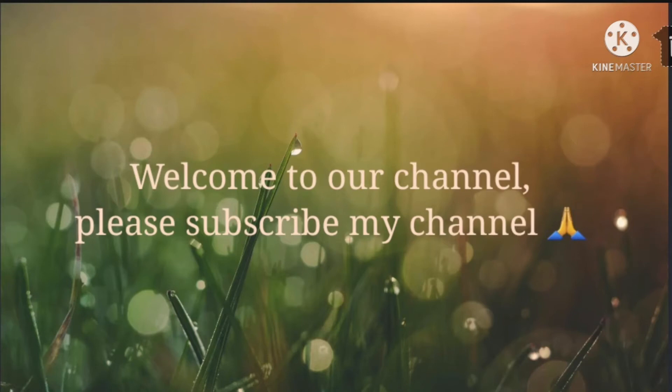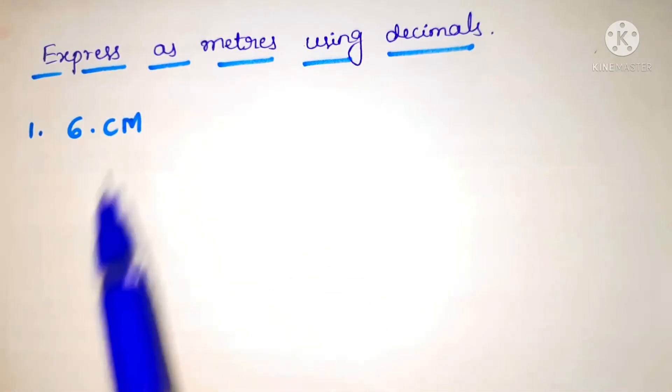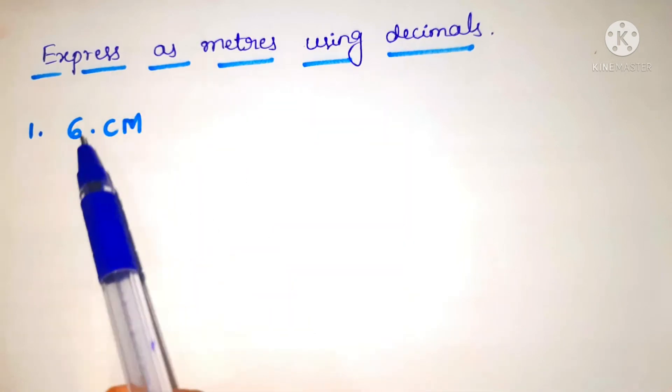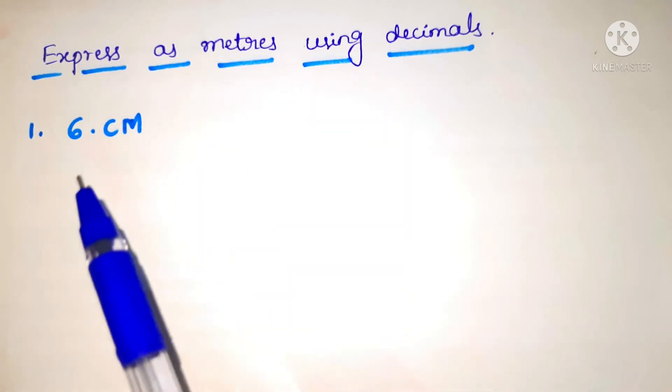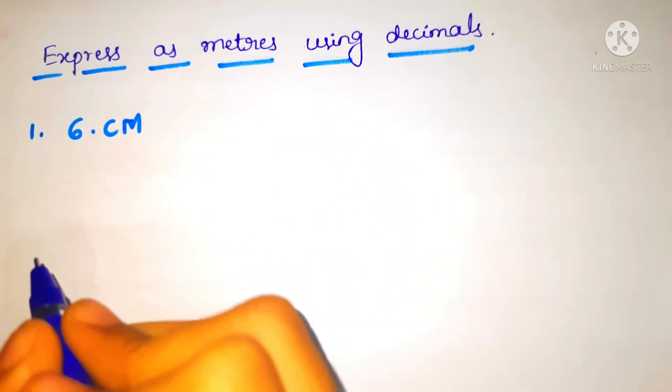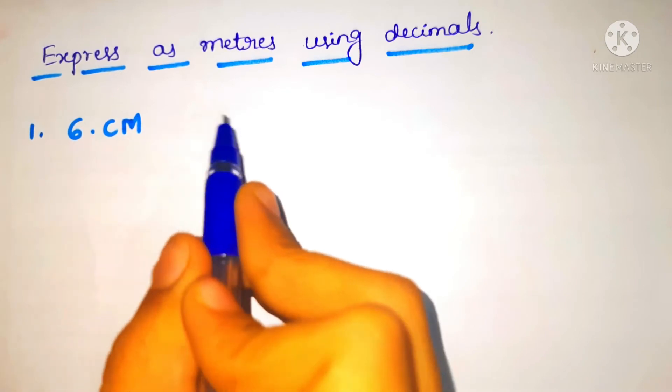Welcome to our channel, please subscribe my channel. So today in this video we will learn about expressing meters using decimals. We have to convert centimeter into meters. So we look at the first example which is 6 centimeter. We have to convert it into meters.